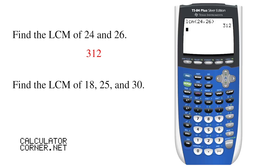Find the least common multiple of 18, 25, and 30. Again, go to math, tab to the right to num, and go down to the number eight, LCM.